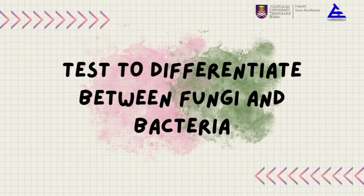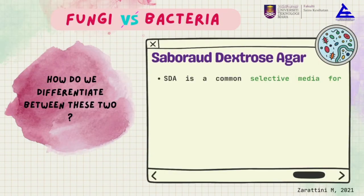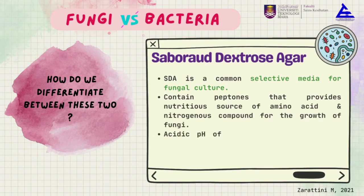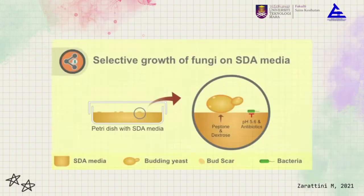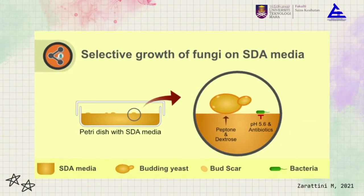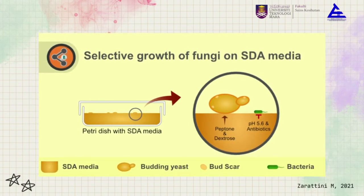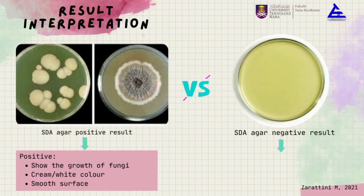Most of the articles we read state that Leptothrix is a bacterium, but one article states it is a fungus. That is why we suggest performing the SDA (Sabouraud Dextrose Agar) test to differentiate between fungi and bacteria. SDA is a selective medium for fungi and yeast. The principle is that peptone and dextrose provide nutrients for fungal growth, while low pH and the presence of antibiotics inhibit bacterial growth.